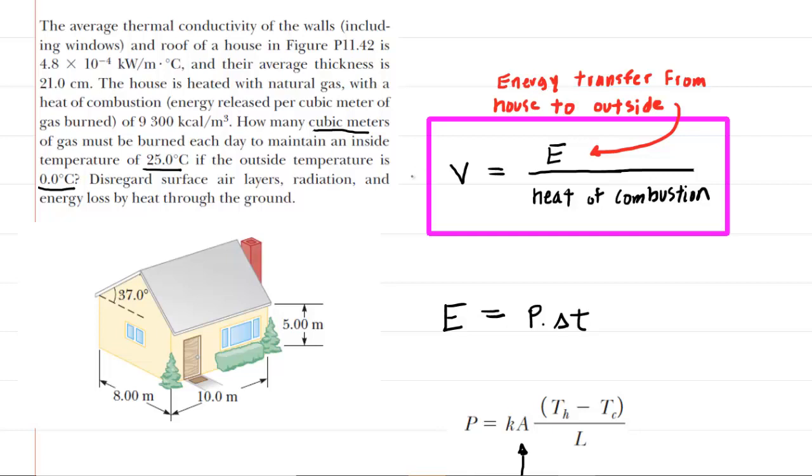There are a few equations we're going to need to make that calculation. We'll start with the equation outlined in this purple box. The volume of gas that must be burned will equal the energy transferred from the house to the outside divided by the heat of combustion given in the question. Let's briefly understand why this works. Let's make up some hypothetical numbers. Say the amount of energy was 1000 joules and the heat of combustion was 10 joules per meter cubed. If we divide those out, we would get 100, but more importantly, look at the units. The joules cancel out and you're left with meters cubed, which is a standard unit of volume.